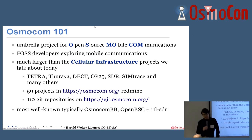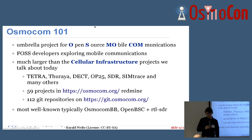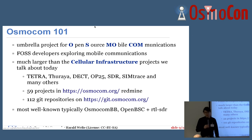What brings us together is that we are all people who are enthusiastic about doing free software in the area of cellular or mobile communications. We did some work on Tetra, Turaya, DECT, OP25, various SDR projects, SimTrace, and many others. We had 59 projects in Redmine and 112 Git repositories. What most people know about is mostly the RTL-SDR, OpenBSC, and OsmocomBB, but there's lots of other interesting stuff — feel free to check that out.